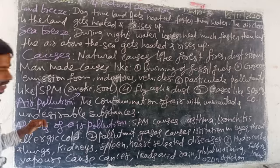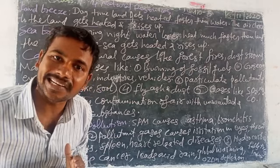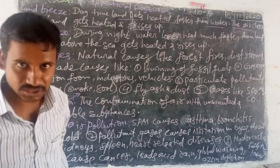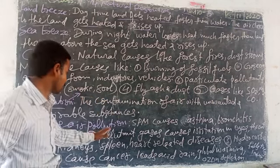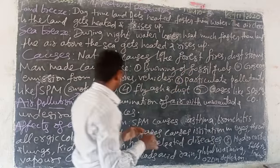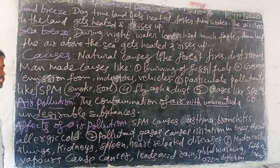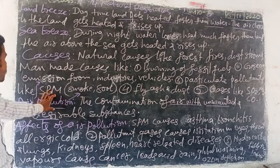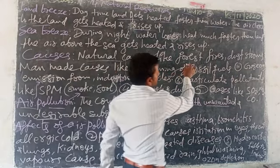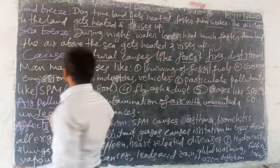Next, causes of air pollution. Air pollution is the contamination of air with unwanted and undesirable substances. Natural causes include forest fires and dust particles.